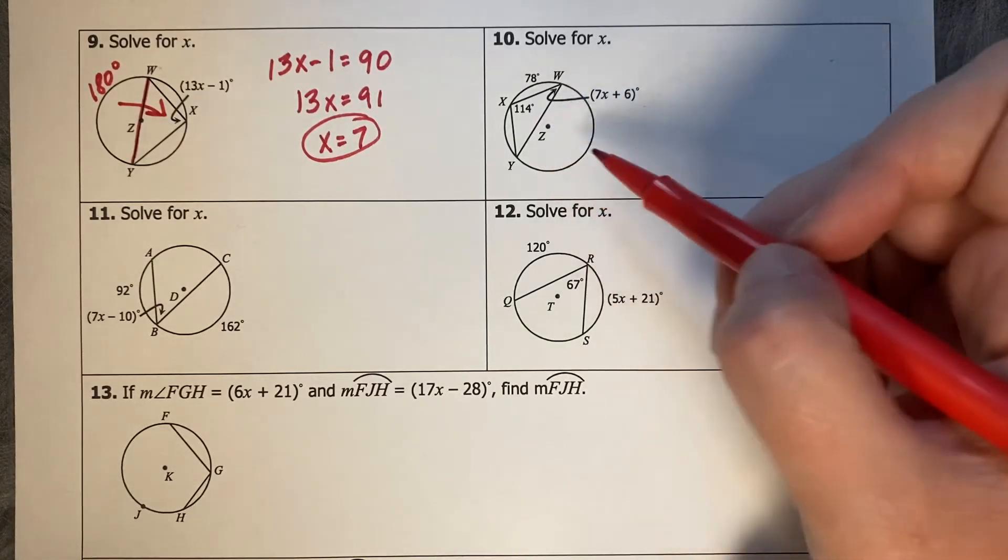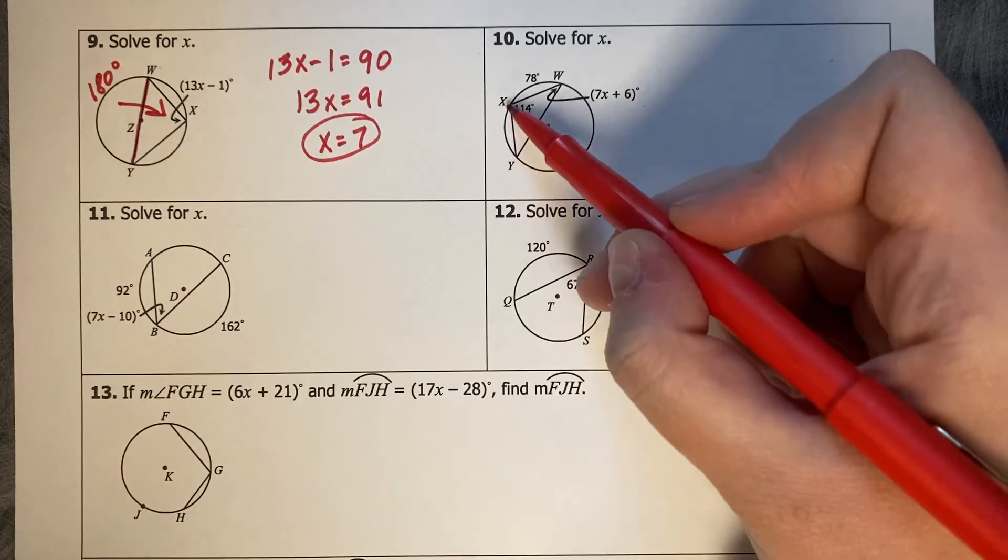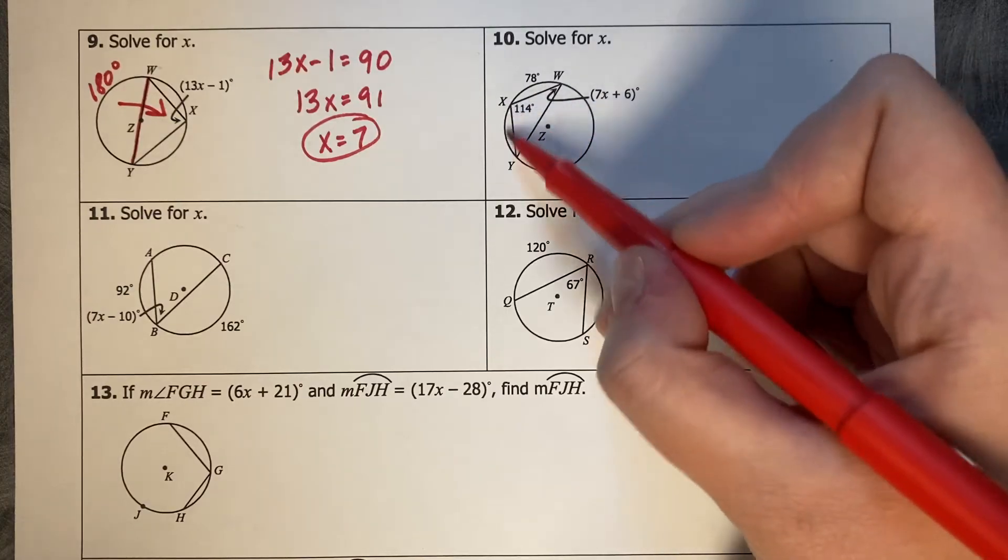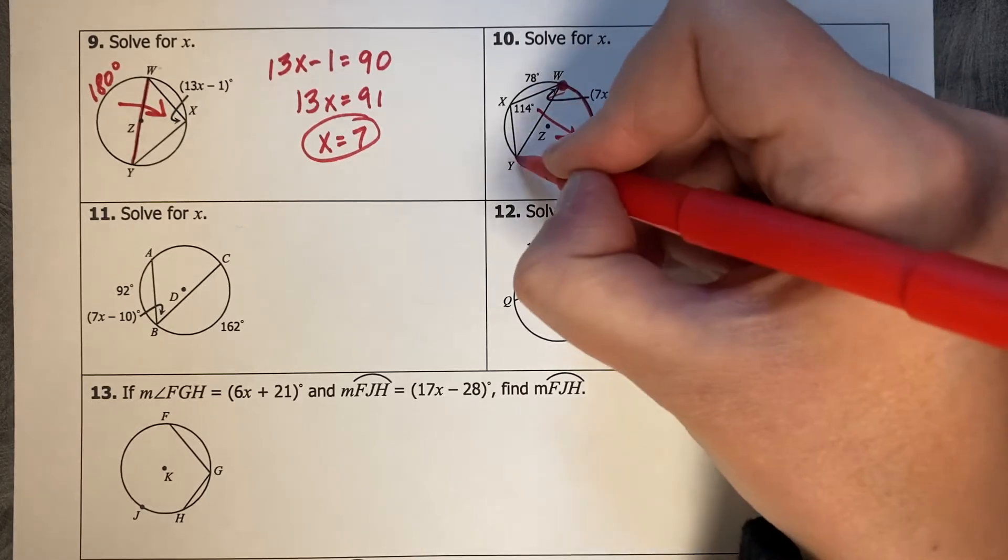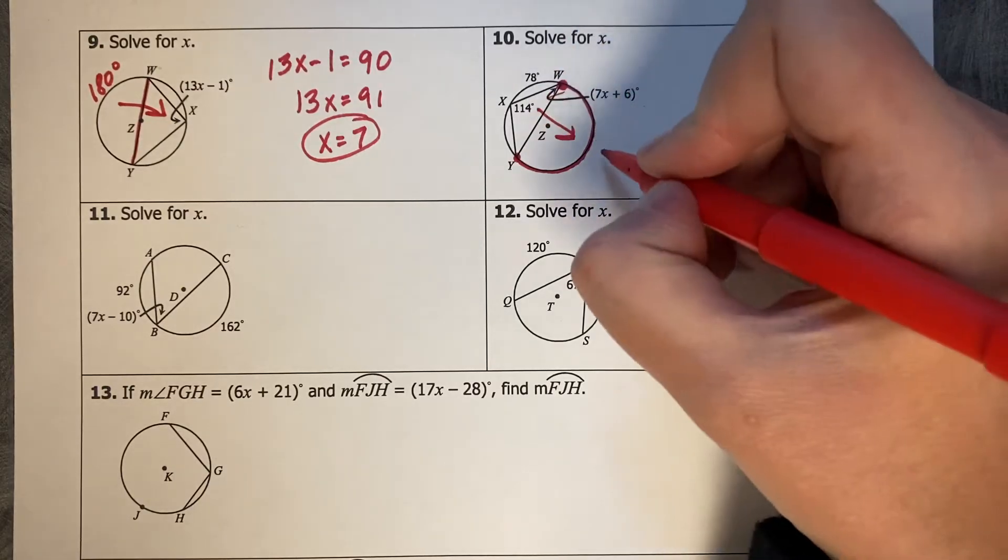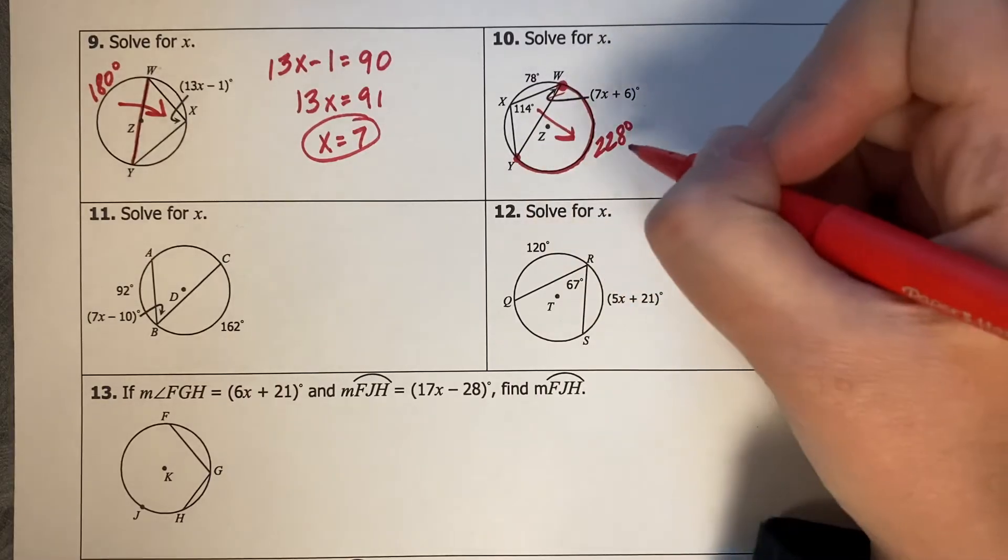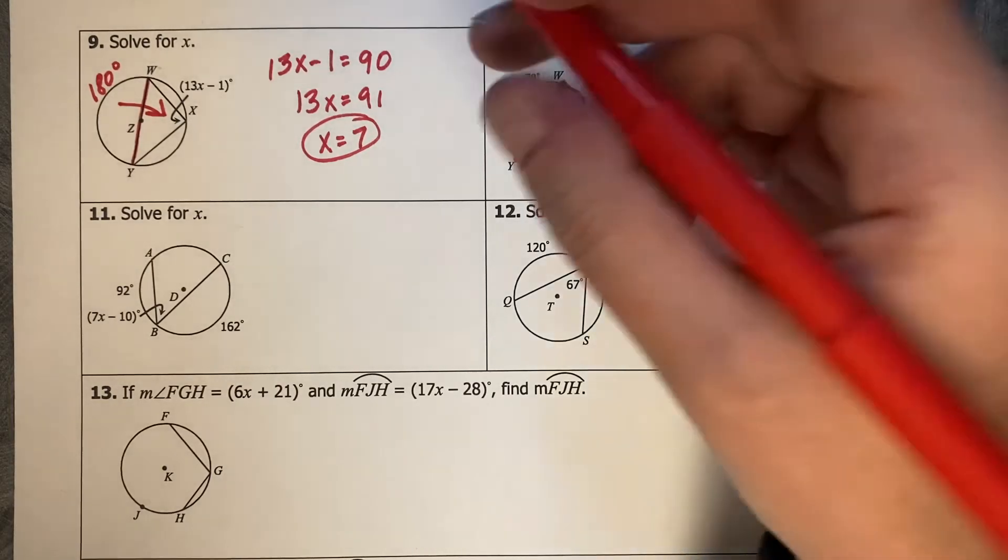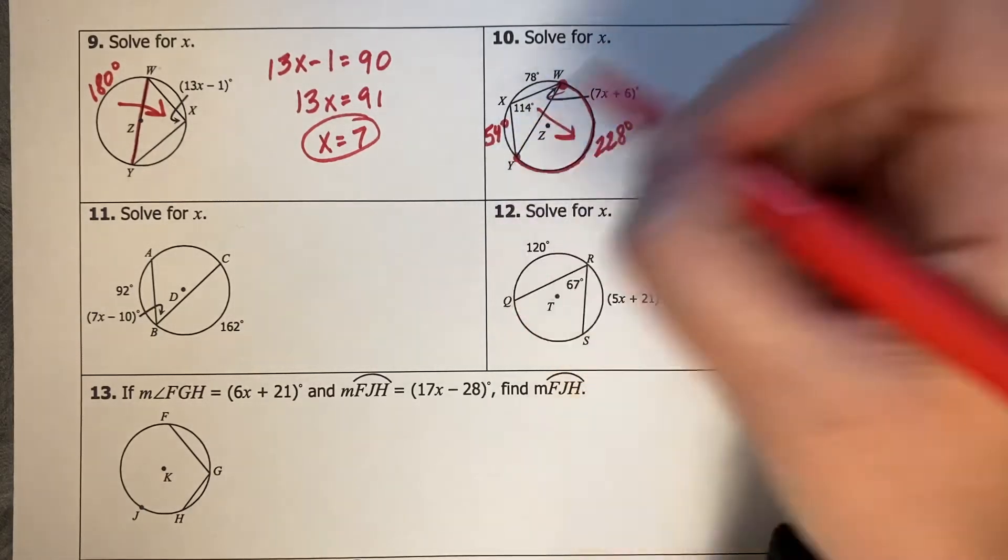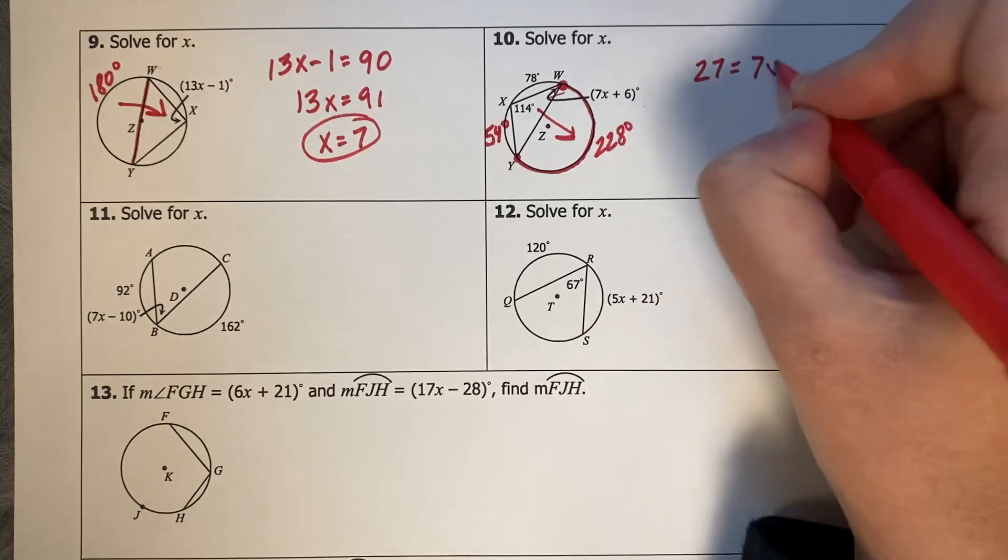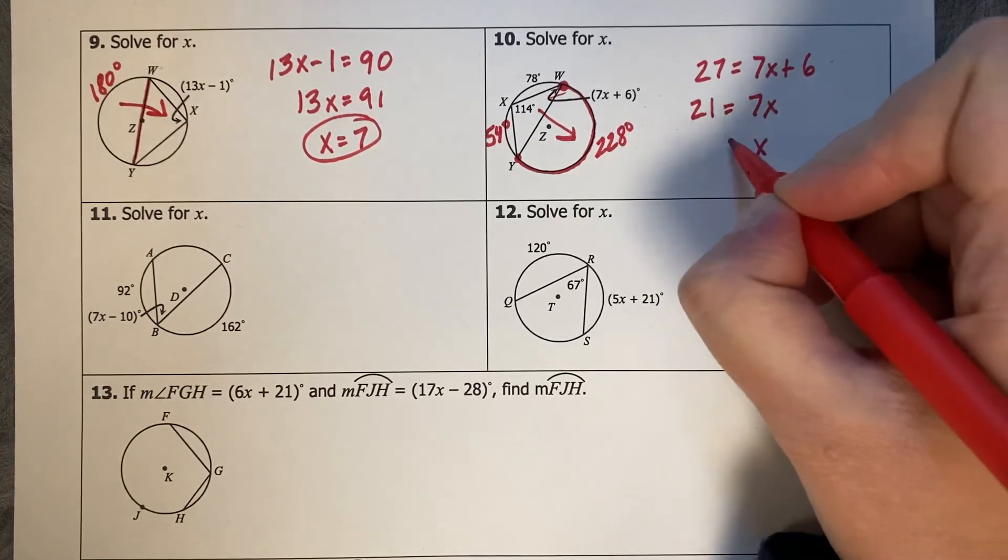All right, this next one, it kind of looks like a diameter, but don't be fooled. What's happening here is that this angle measure corresponds to the arc measure XY, but I don't know the arc measure XY. What I do know is that this inscribed angle is 114, which means that its corresponding arc, which was all the way from Y to W, that's going to be double 114, which is 228. Then I know 78 and 228 and this missing arc of XY, so 228 plus 78 minus 360 leaves me with 54 degrees for that chunk. And then if we're going by half again, 54 divided by 2, that's going to be 27 equals 7X plus 6 minus 6, 7X equals 21, divide by 7, and X equals 3.